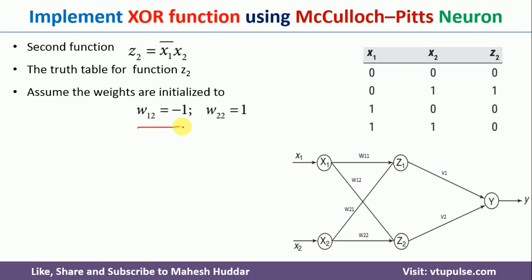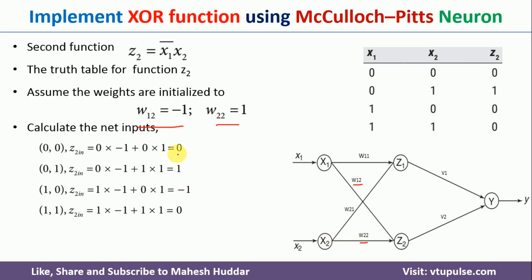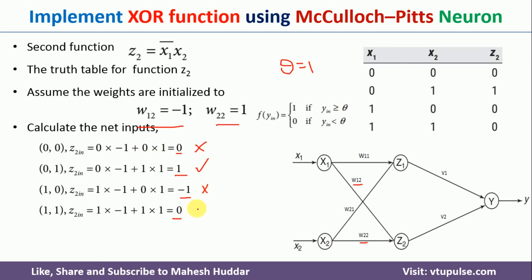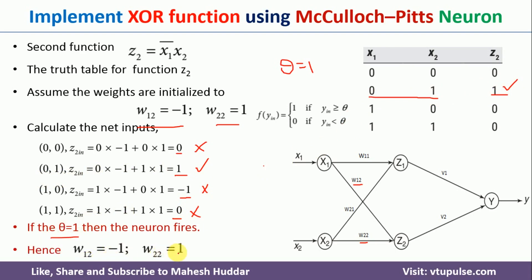With W12 = −1 and W22 = 1, the net inputs become: 0, 1, −1, and 0. Setting theta = 1, the neuron does not fire for (0,0) since 0 < 1; it fires for (0,1) since 1 ≥ 1; it does not fire for (1,0) since −1 < 1; and it does not fire for (1,1) since 0 < 1. This is exactly what we expect. So for Z2, theta = 1 with weights W12 = −1 and W22 = 1.